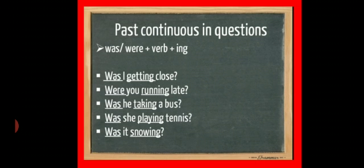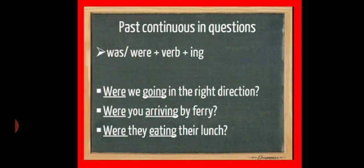Got it? Now next is past continuous tense in questions. In interrogative form, you will add was or were at the first place, the rest remains the same. Was or were plus your subject, then verb plus ing. Like was I getting close, were you running late, was he taking a bus. We use were when we have subject we, you, or they. Like were we going in the right direction, were you arriving by ferry, were they eating their lunch and so on.